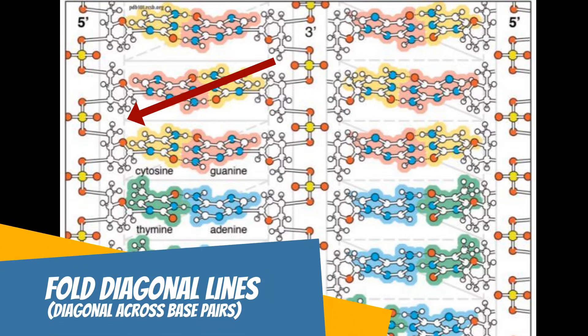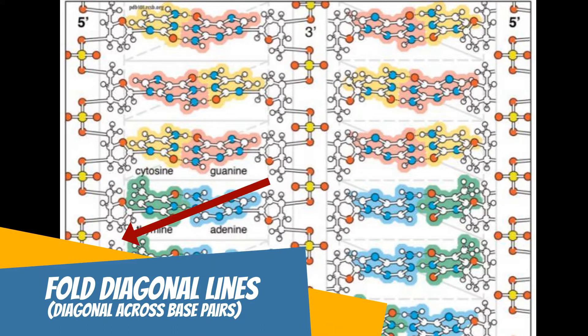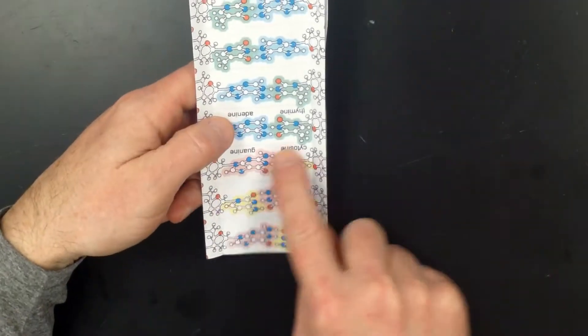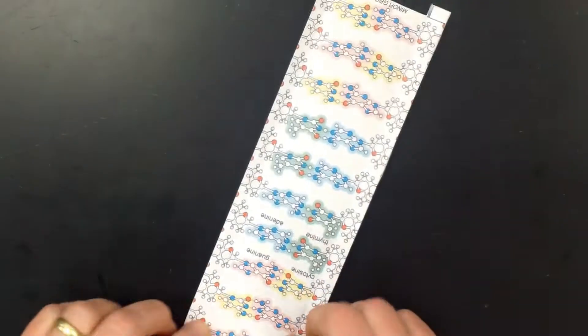Now you want to repeat this process for all the diagonal folds. Again, making sure to have solid lines on the outside edge of folds and the dotted lines hidden on the inside edge of the fold.